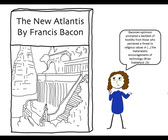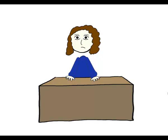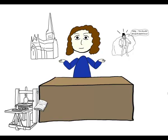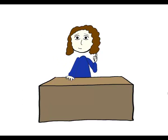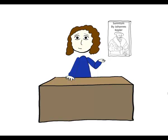Baconian optimism prompted a backlash of hostility from those who perceived a threat to religious values in the materialistic encouragements of technology. And this is where we begin to see tensions developing between the then fundamental and dominant philosophy of religion and new discoveries articulated in fiction that today we would find in a bookshop's science fiction section. In 1634, Johannes Kepler was the first person to couch an earnest scientific argument as a visionary fantasy with his book, Somnium.